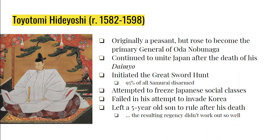The second great unifier is Toyotomi Hideyoshi. Originally a peasant, he became second in command to Nobunaga, and after gaining control, he continued to unite Japan in the name of his old lord. Hideyoshi initiated an event known as the Great Sword Hunt, in which samurai were required to prove their noble descent and wealth to remain samurai. If they couldn't prove their nobility or wealth, they were disarmed, their rank taken away, and forced back into being peasants. By the time the Great Sword Hunt was done, about 95 percent of the samurai were disarmed, with only five percent remaining.